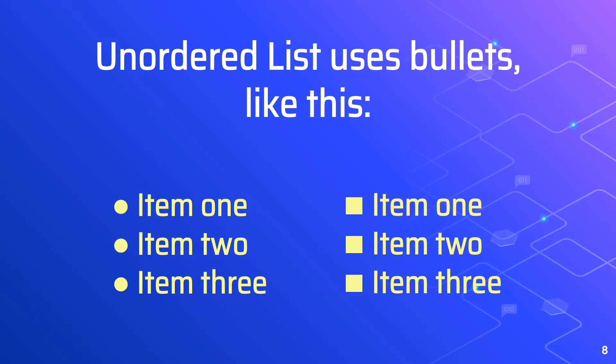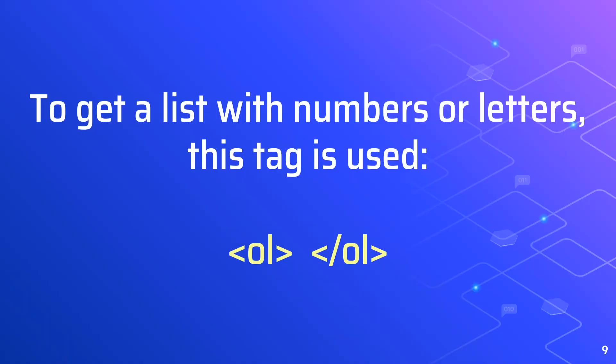To get a list with numbers or letters, this tag is used: the OL tag. OL stands for ordered list, of course.